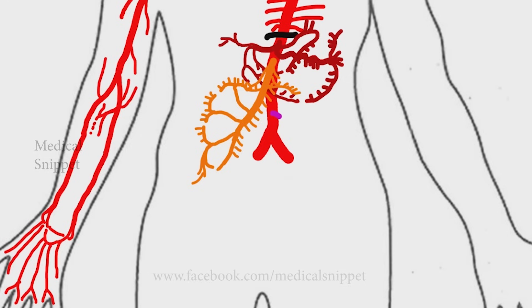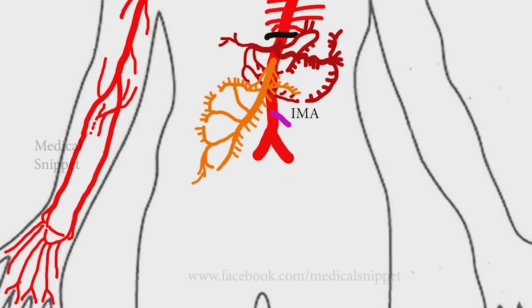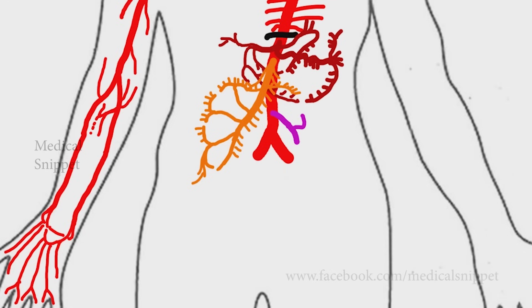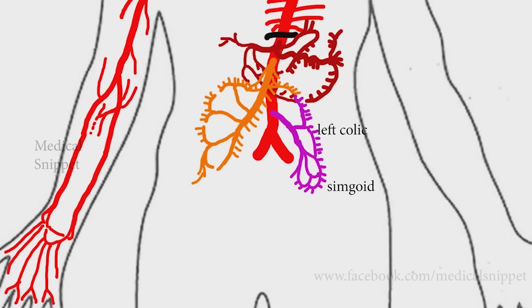The inferior mesenteric artery arises at the level of the third lumbar vertebra. Its territory of distribution is equivalent to the embryonic hindgut — it supplies the large intestine from the splenic flexure to the upper part of the rectum, including the descending colon and the sigmoid colon. It gives rise to the left colic artery, sigmoid arteries, and continues as the superior rectal artery.